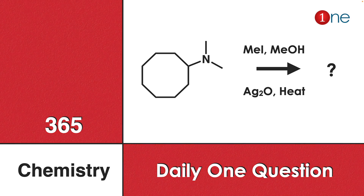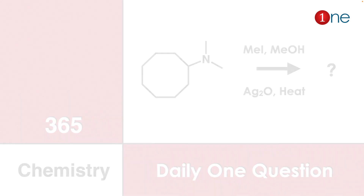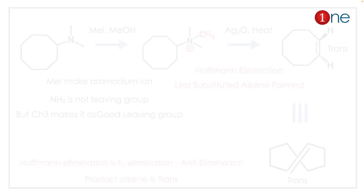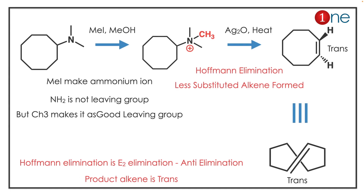The answer involves many steps. The first step of the reaction is the formation of the quaternary ammonium ion. The quaternary ammonium ion makes the amine a good leaving group — normally amine is not a leaving group, but this makes it one.